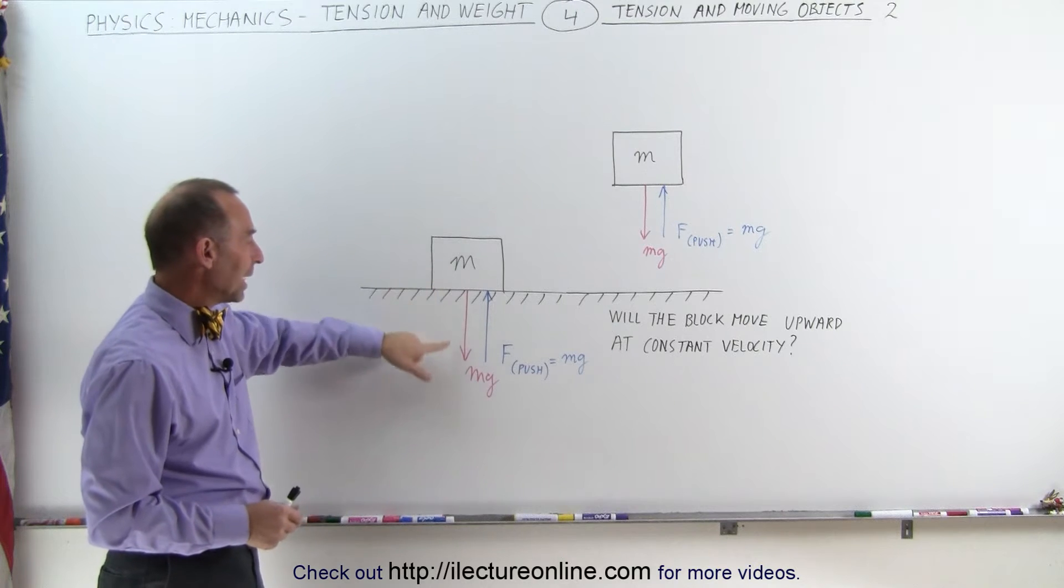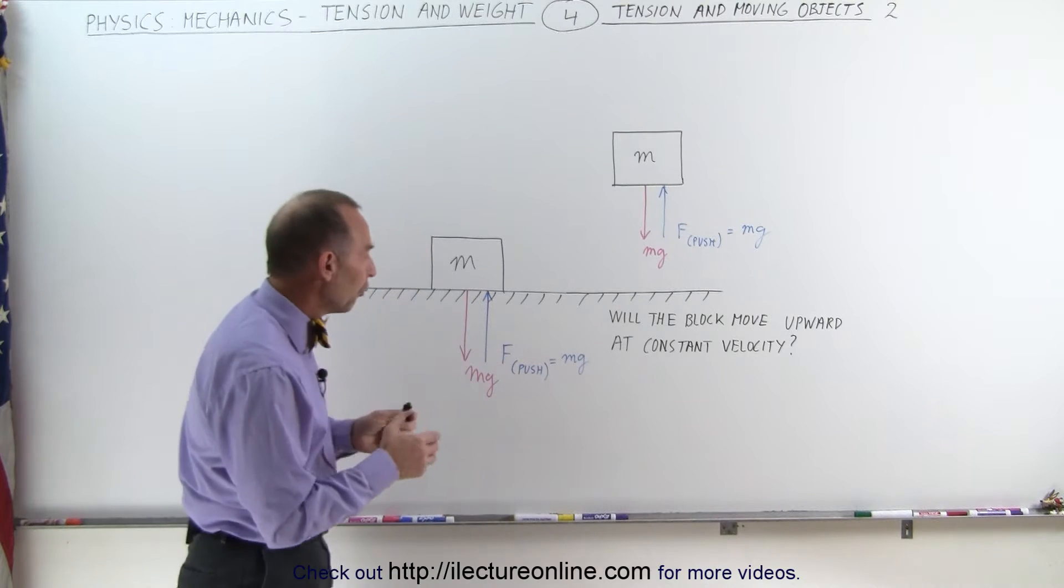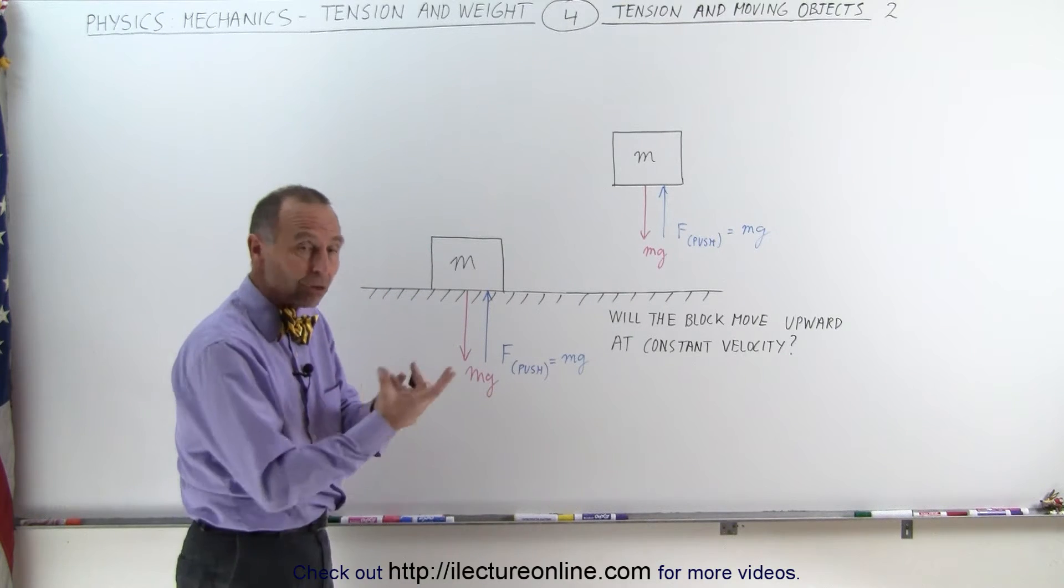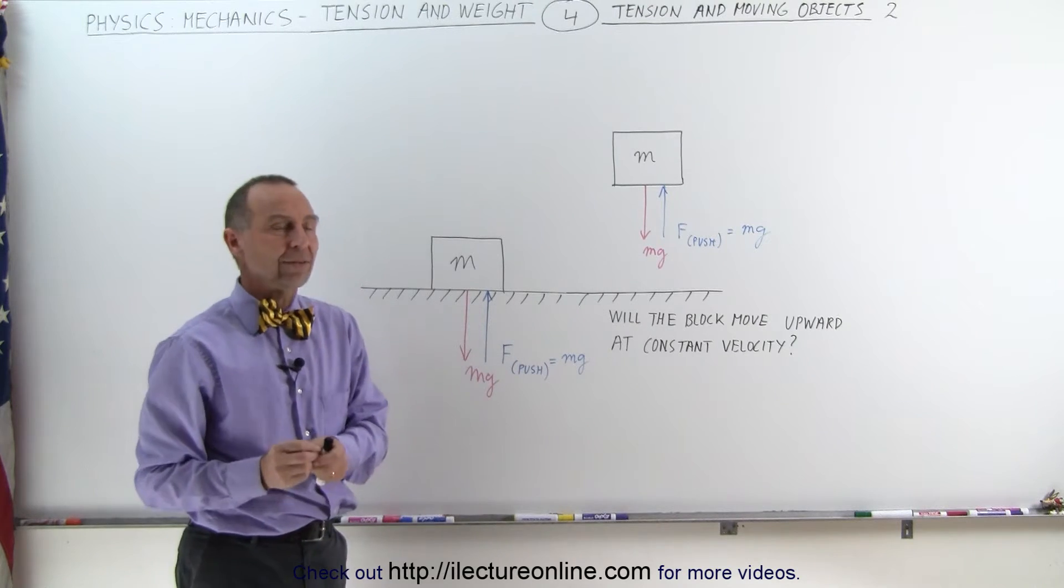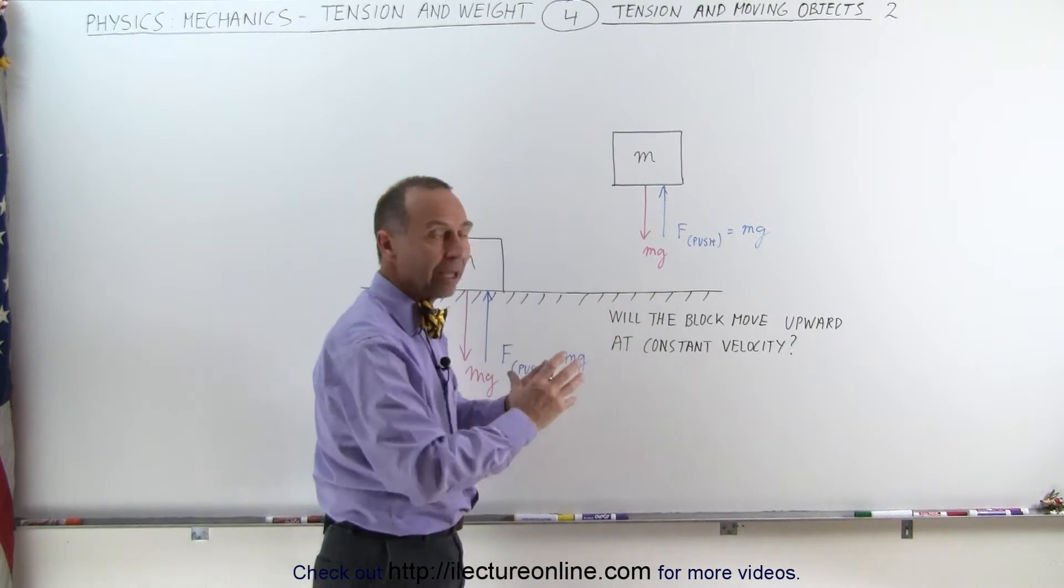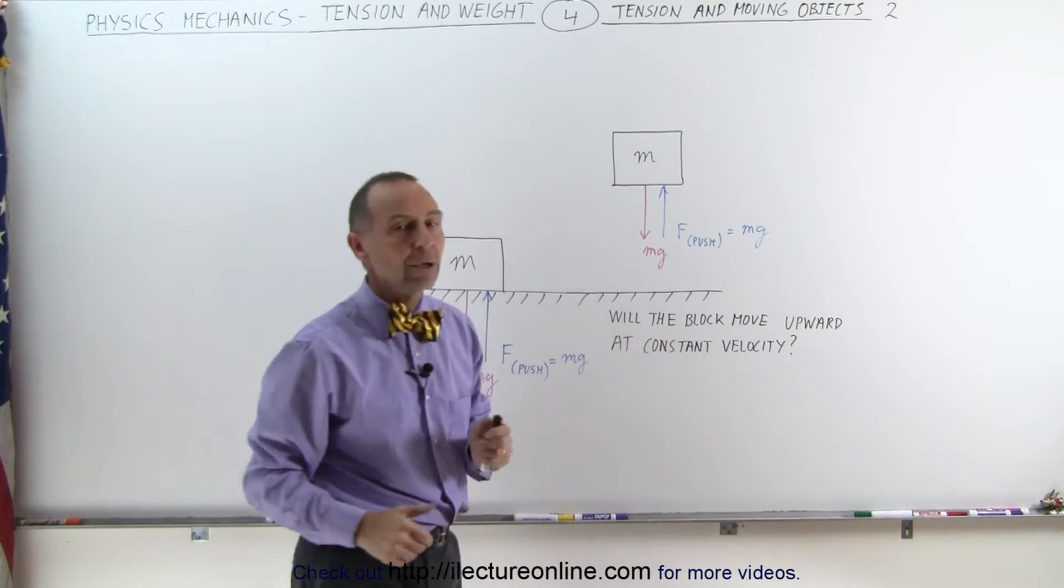Notice that the object has a weight equal to mg. This object, no different, has a weight equal to mg. And let's suppose that there's a force, an outside force, like somebody pushing upward with a force equal to the weight. In this case, it's up in the air and somebody's pushing or a machine is pushing the weight upward equal to mg.